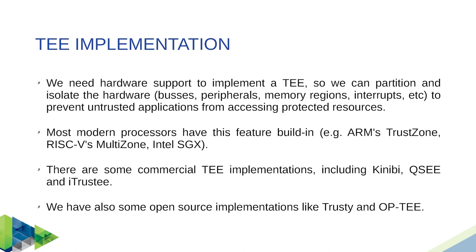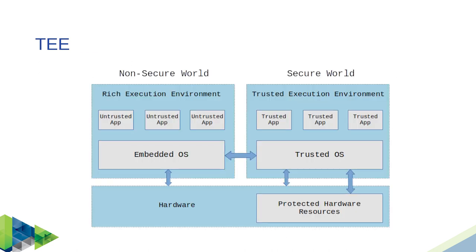We usually call the operating system the Rich Execution Environment. When we want to access assets — code or data — in the Trusted Execution Environment, we make calls into it. From a software point of view, assets stored in the TEE are protected even if the Linux kernel is compromised. Some known TEE implementations include Kinibi from Samsung (used on Galaxy S devices), Trusty from Google (used on Pixel devices), and OP-TEE, an open source implementation maintained by Linaro that can be ported to your device.